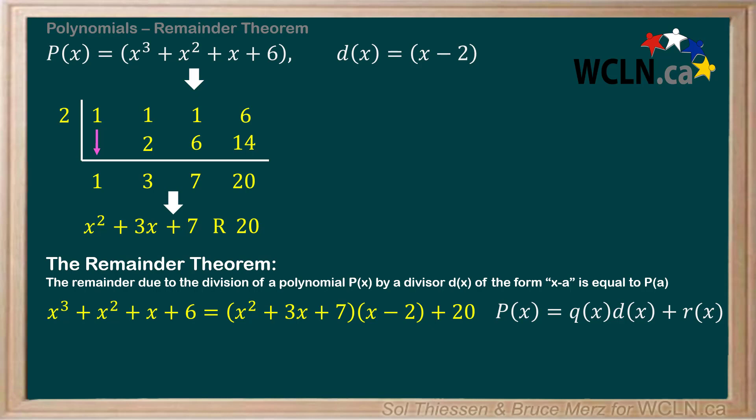Applied to this division, the Remainder Theorem tells us that P(2), which is the a value from our divisor x minus 2, will be equal to the remainder.